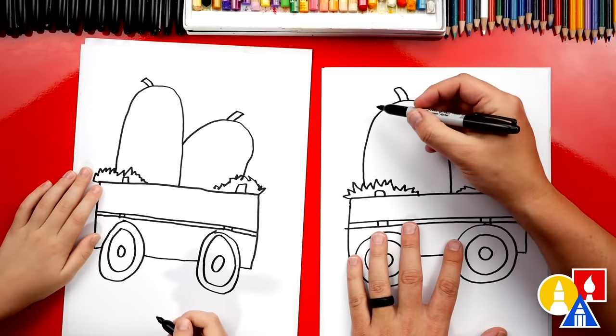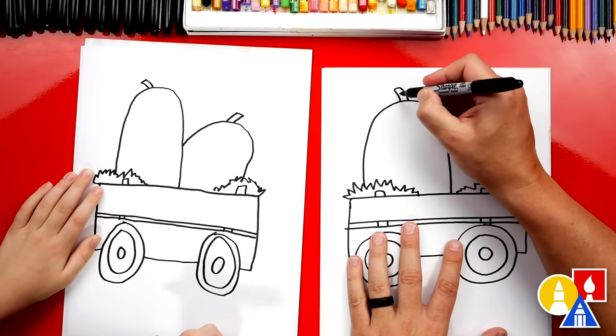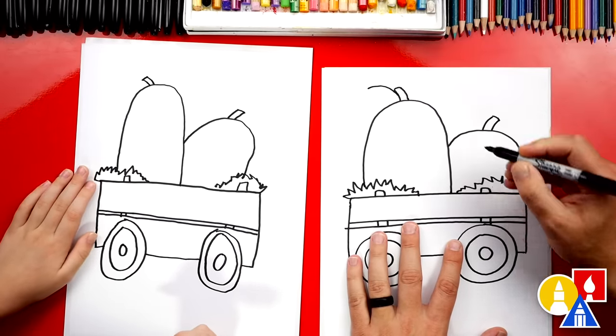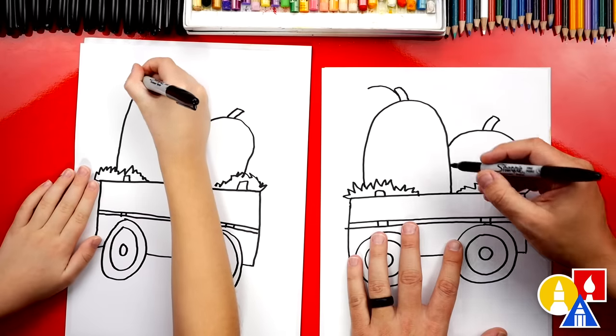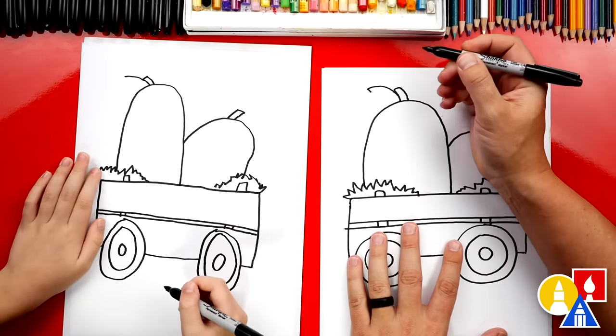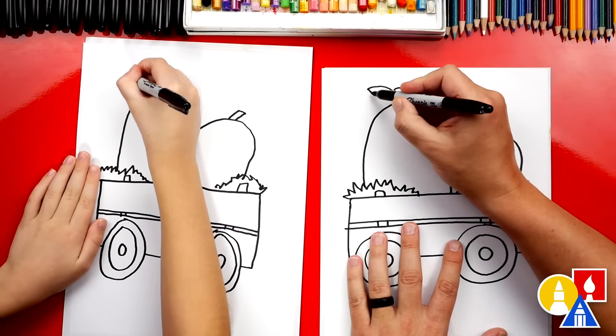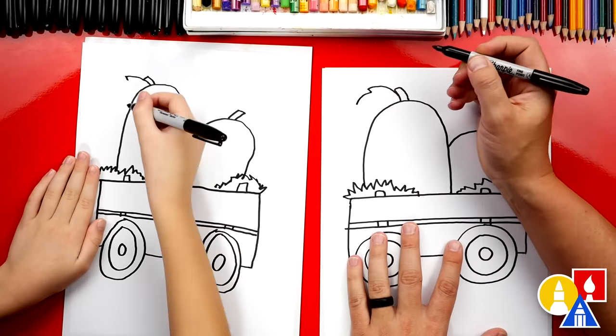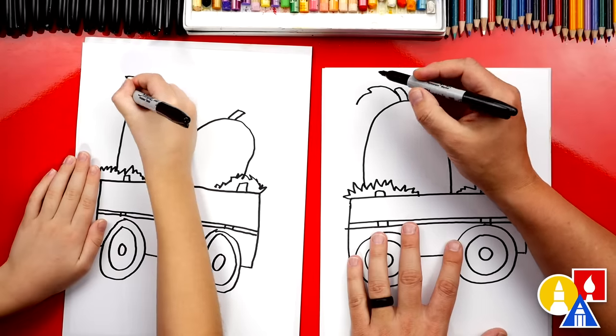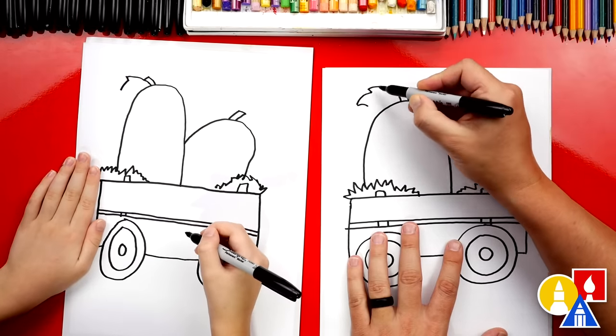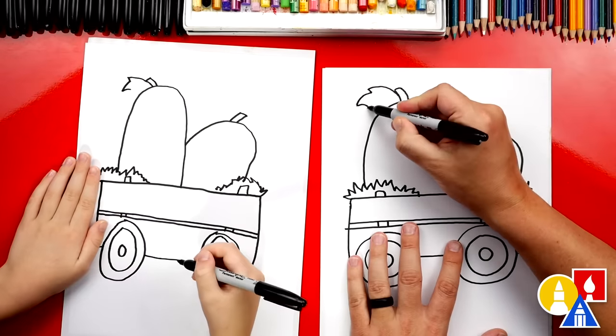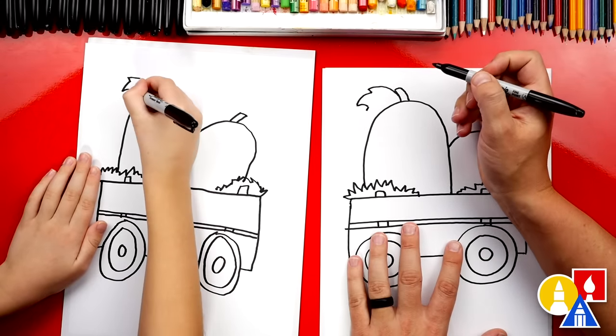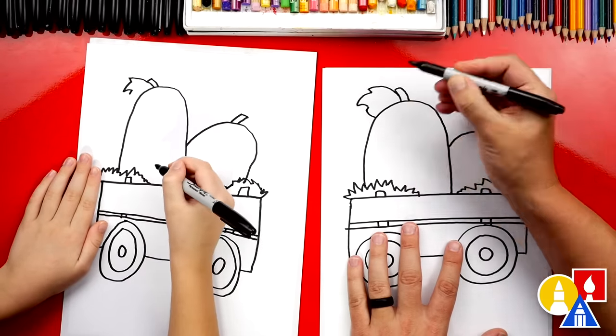Now let's add pumpkin leaves coming out of the top of our pumpkins. We'll draw one big curve. Then we're gonna draw a little zigzag and then a bigger curve coming out. Now let's draw another curve that kind of matches that first one or this last one we drew. And then we'll draw a little zigzag at the bottom of that and then curve back and connect.